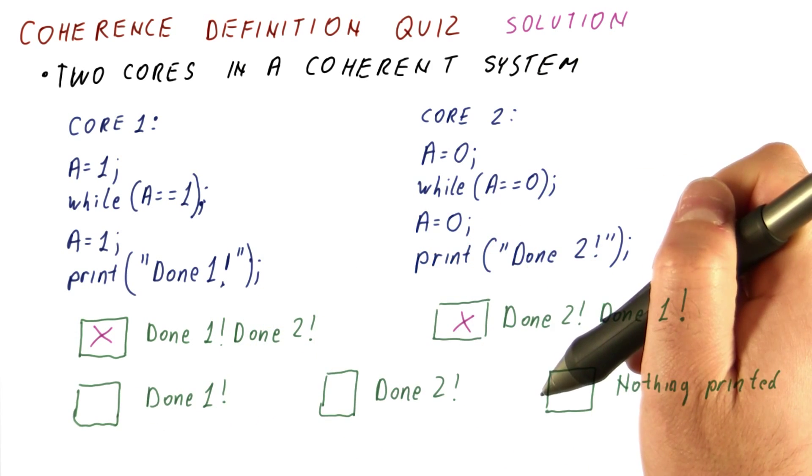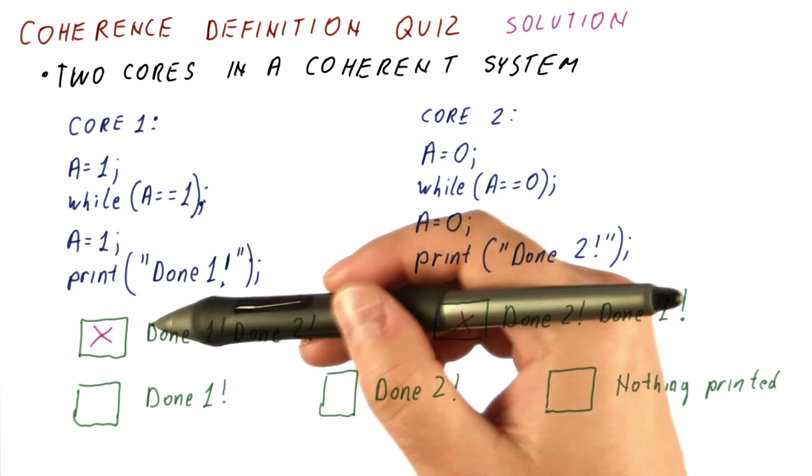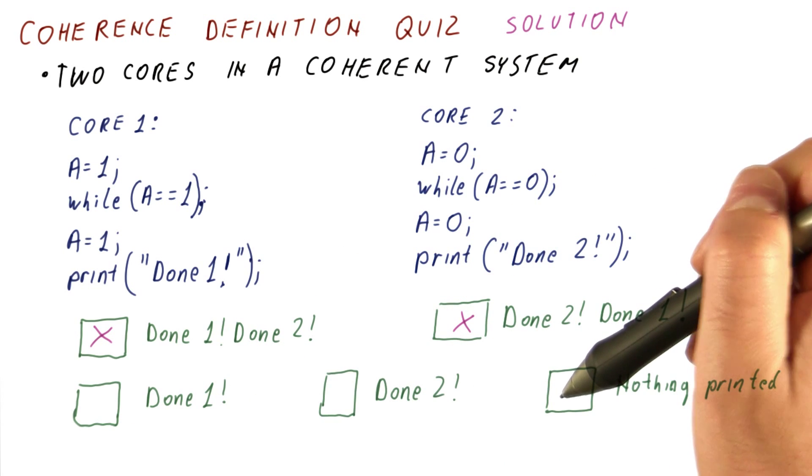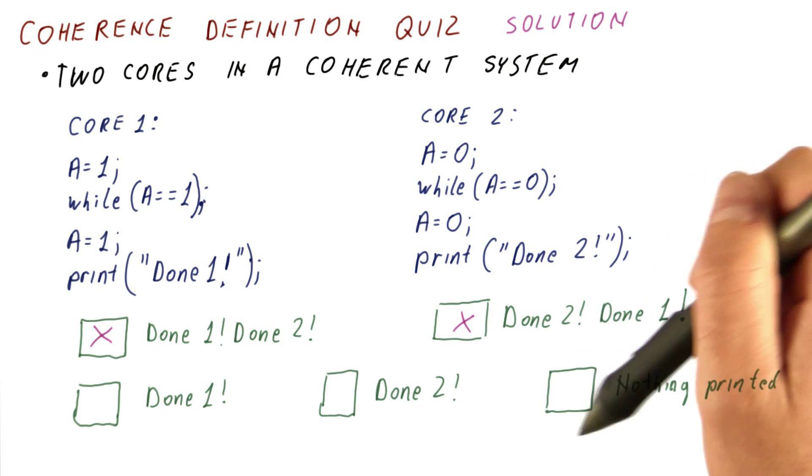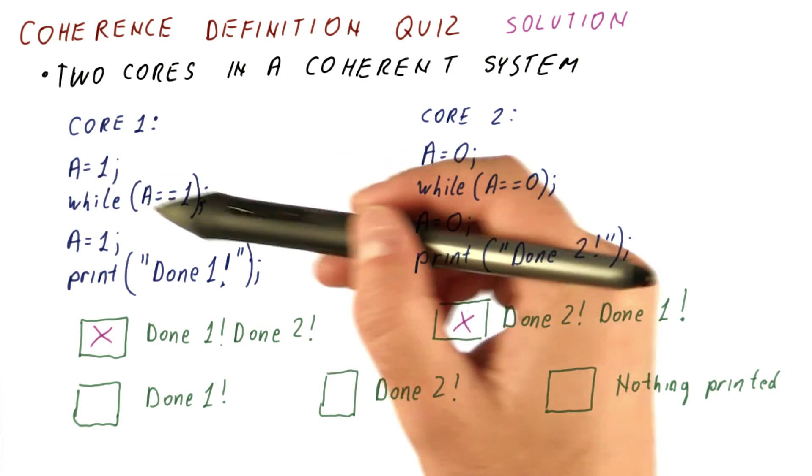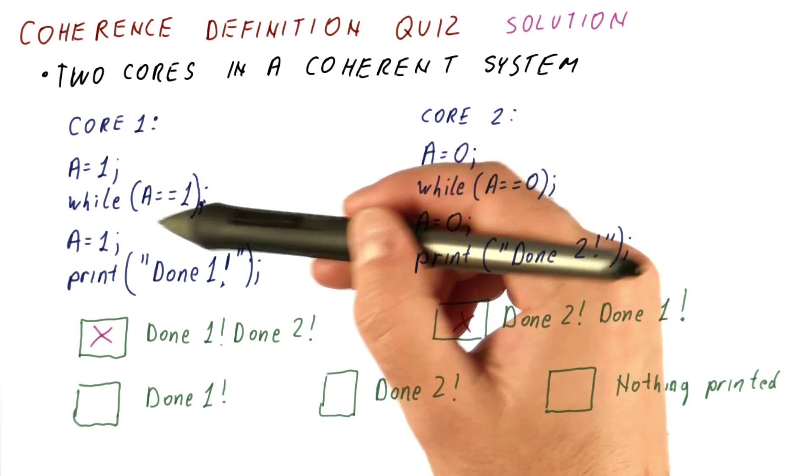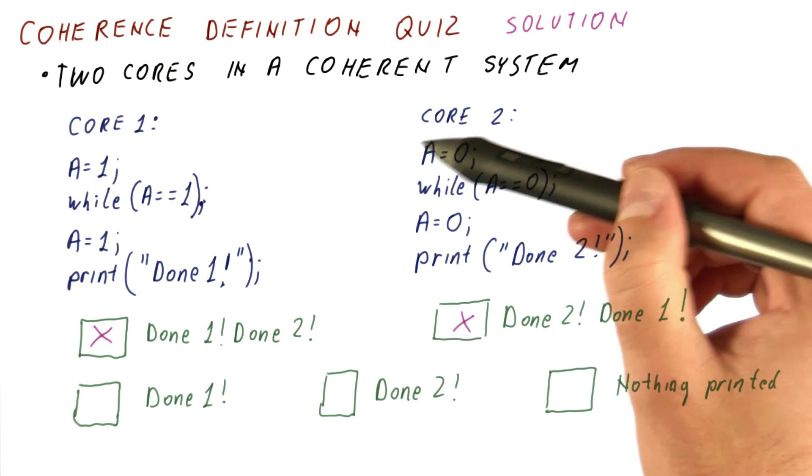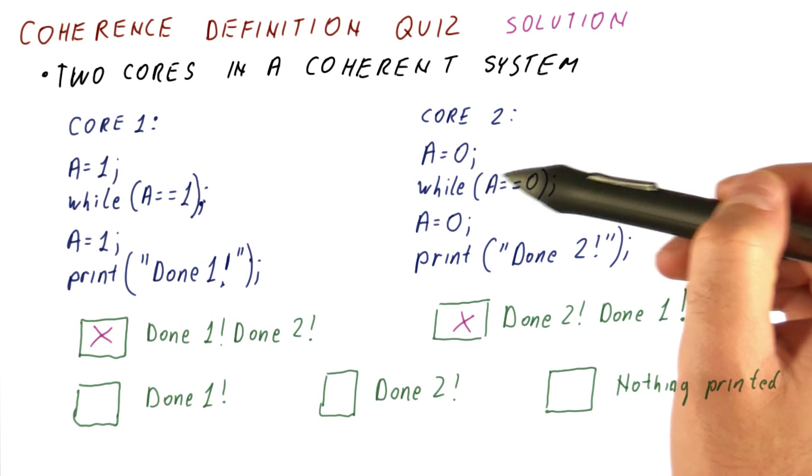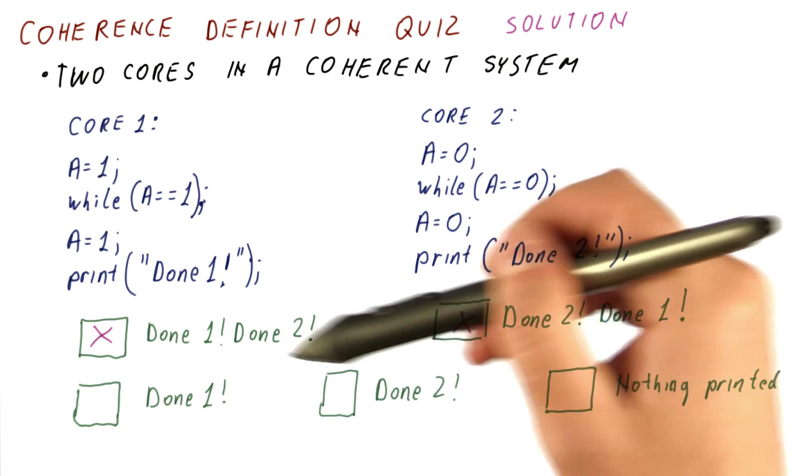In an incoherent system, it can easily happen that you get these, or any of these other three. So for example, nothing can be printed by simply storing one to the cache, and then never really checking anything else, just looping on the value in the cache here. Meanwhile, this one stores another value in its own cache, then just infinitely spins on it.